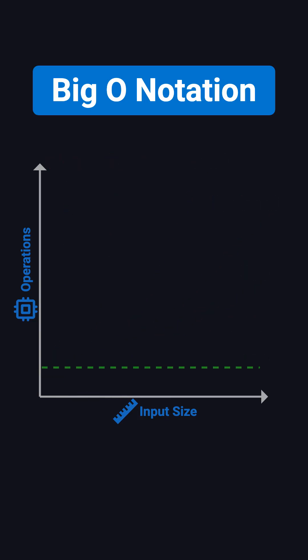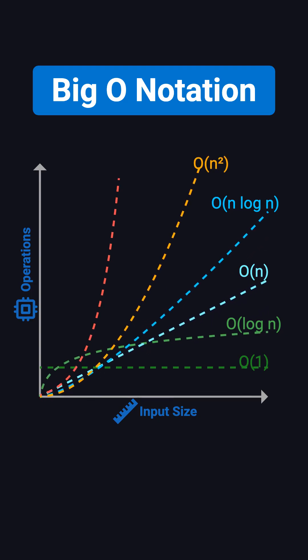You might have heard someone say an algorithm is O of n or O log n, but what does that actually mean? Simply put, Big O notation is a way of using math to describe how efficient an algorithm is. It tells us how quickly the running time will grow as the amount of data increases.